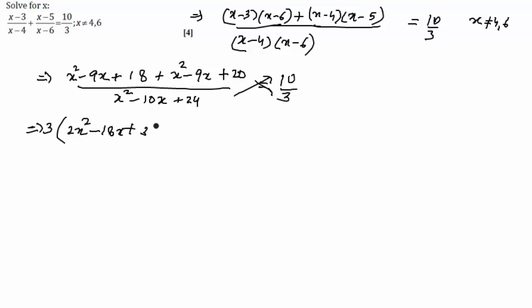plus 38 equal to 10 into x square minus 10x plus 24. Opening the bracket and taking all the terms on one side and combining the like terms, we get the equation as 2x square minus 23x plus 63 equal to 0.